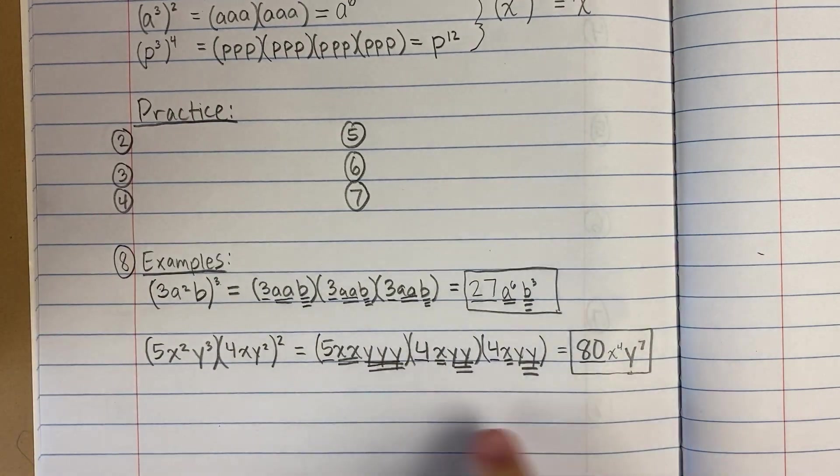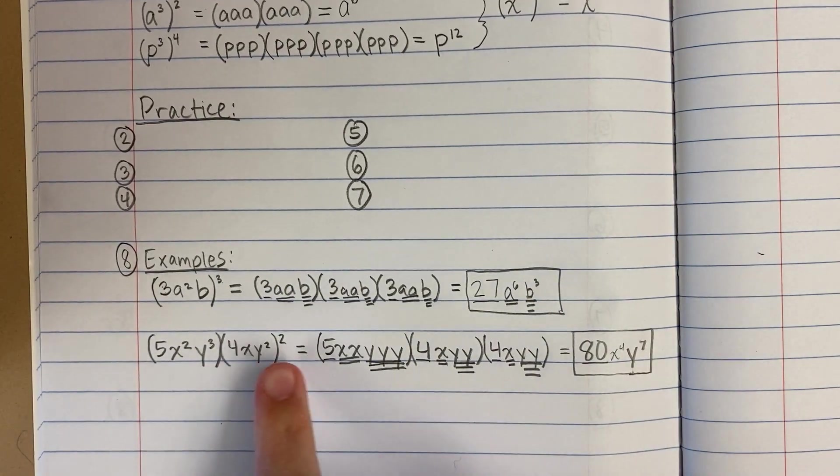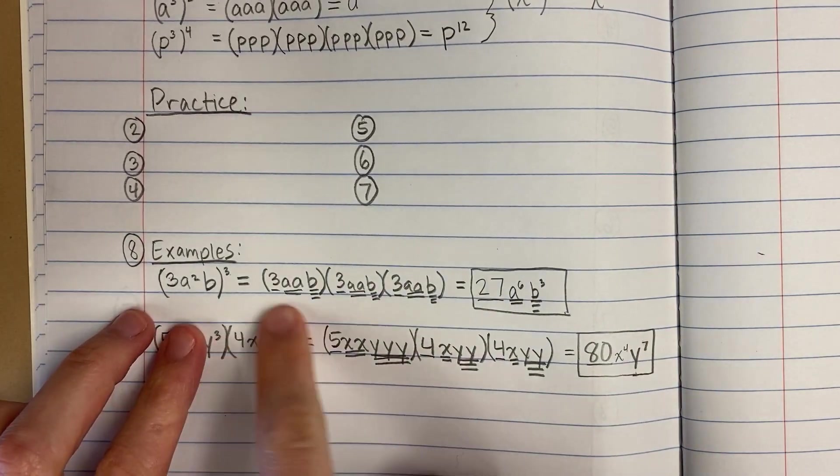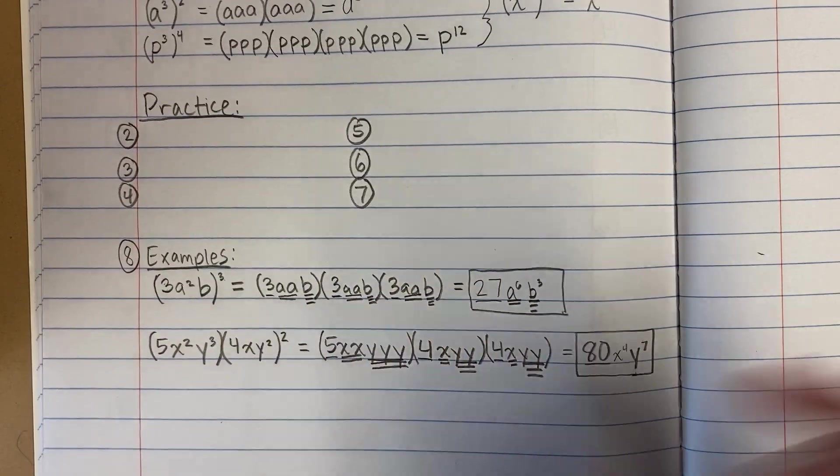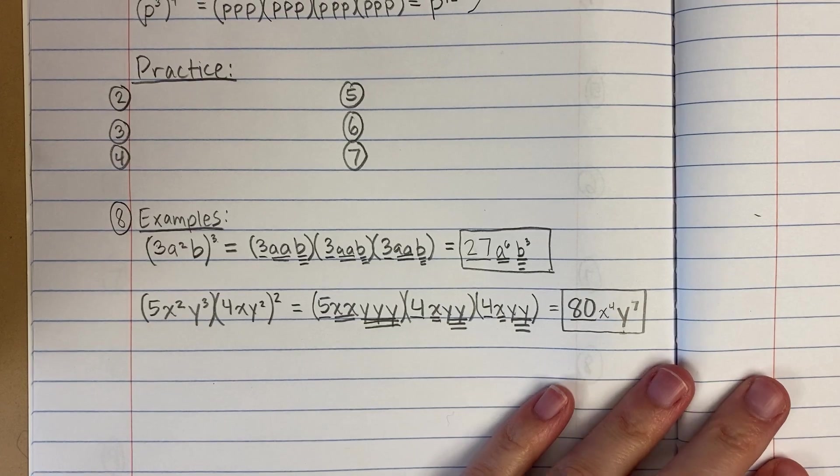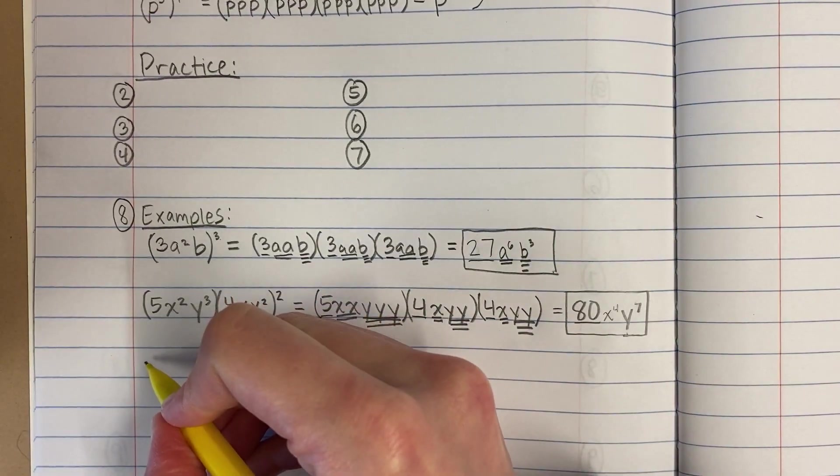Okay. And here, are there shorter ways to do it? Mm, kind of, like you could distribute this in first and then, but if you just are always comfortable writing it out, then that'll work every time. Let's do one more.